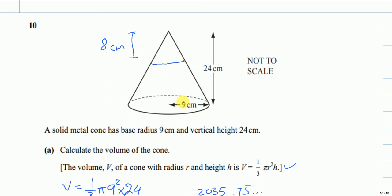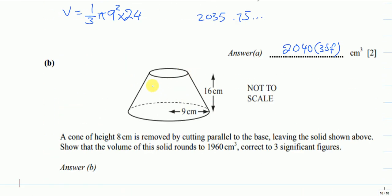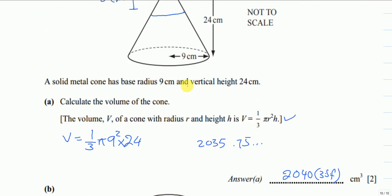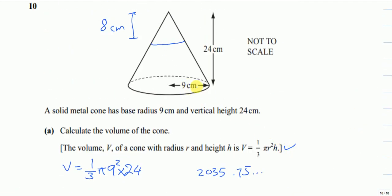We cannot directly calculate the remaining volume because this shape is not a cone, but we know the volume formula for a cone. From the full cone, we remove the 8 cm height cone to get what's remaining. But first, we need to find the radius of the small cone.